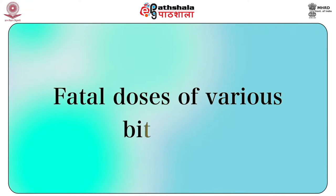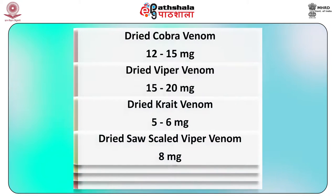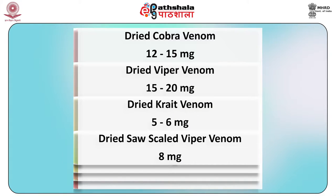The fatal doses of various bites: dried cobra venom is 12 to 15 mg, dried viper venom is 15 to 20 mg, dried krait venom is 5 to 6 mg and dried saw-scaled viper venom is 8 mg. The death may occur instantaneously from neurogenic shock resulting from fright; otherwise the fatal period is half to 24 hours in colubrine bite and 2 to 4 days in viper bite.